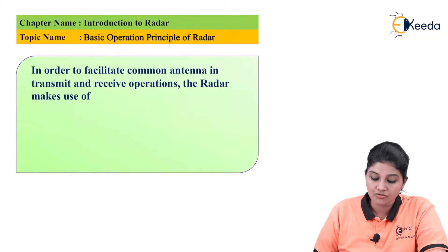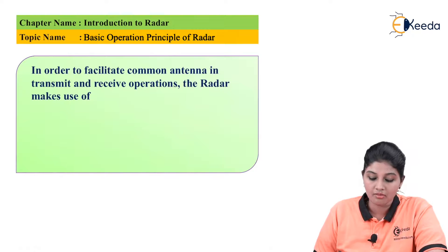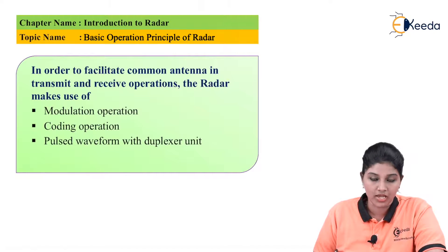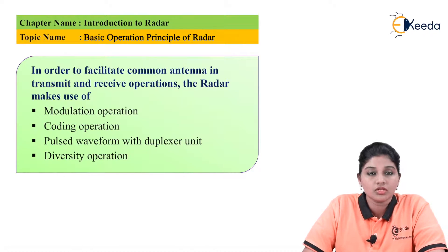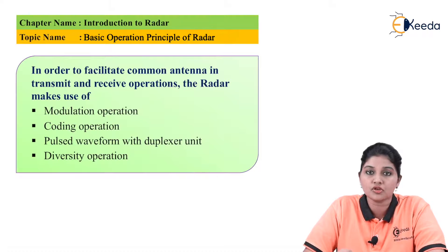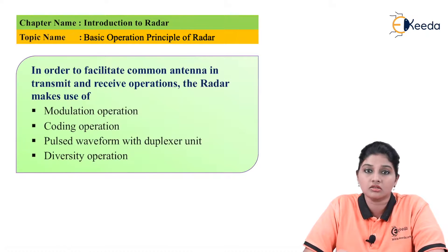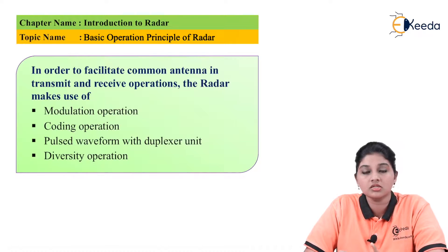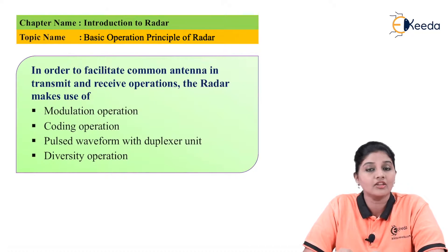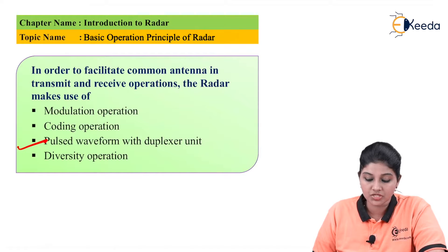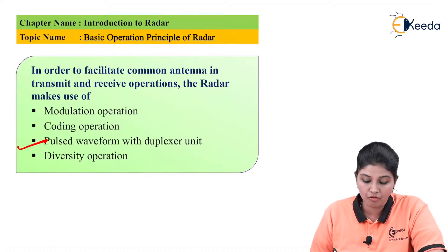The next question: in order to facilitate a common antenna in transmit and receive operation, the radar makes use of which of the following? Options are: modulation operation, coding operation, pulsed waveform with duplexer unit, or diversity operation. Since signals are transmitted as short pulses and the antenna is a duplexer that performs both transmission and reception, the correct answer is option C — pulsed waveform with duplexer unit.